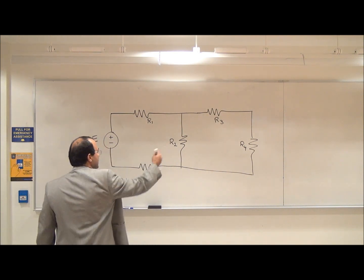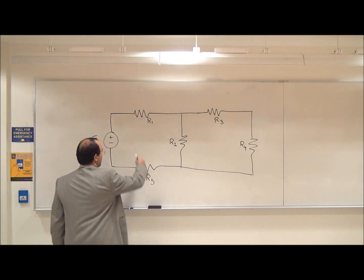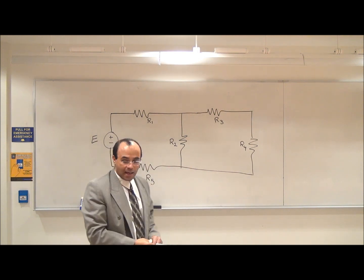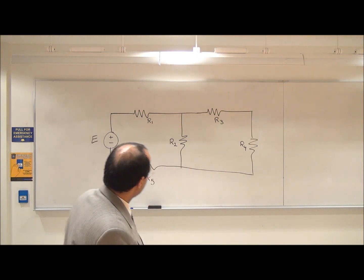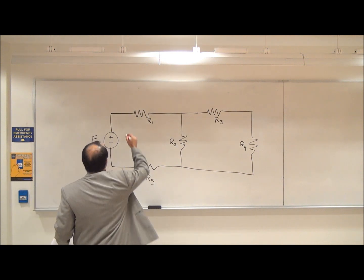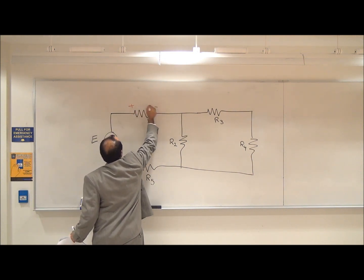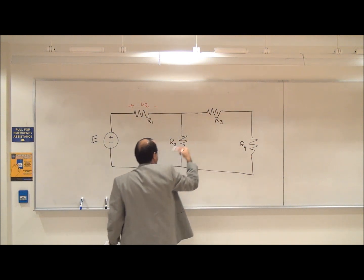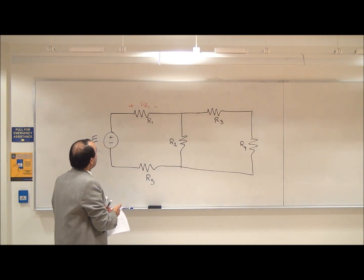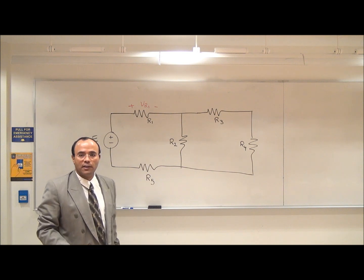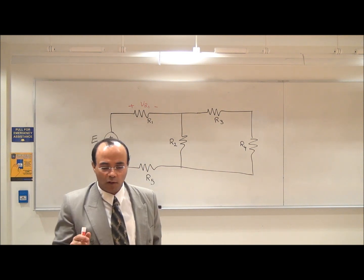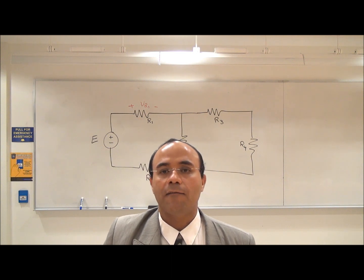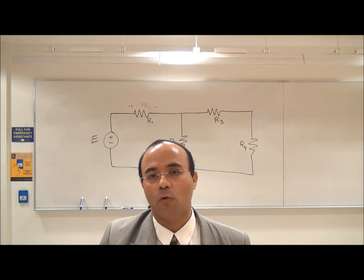Here is the circuit in lab number two. I have R1, R2, R3, R4, R5, and as you can see, they are going to have some variables assigned. So this one, for example, is going to be VR1, VR3, VR4, and so on. My intention is to stop marking on R1, because I want to talk about component voltage versus node voltage.